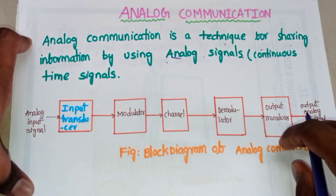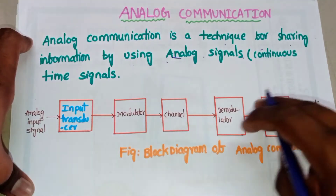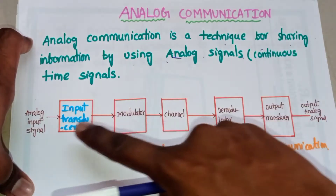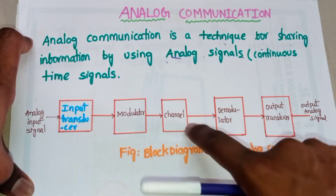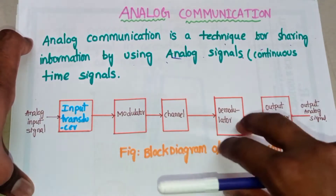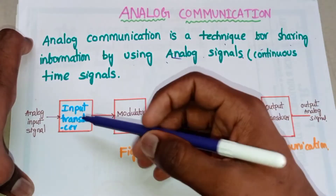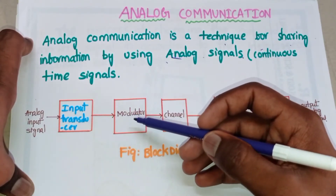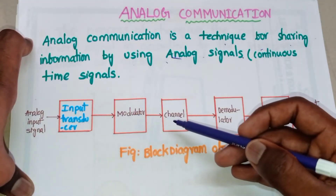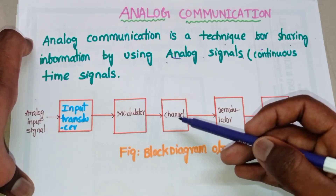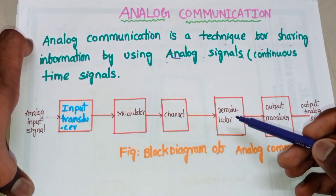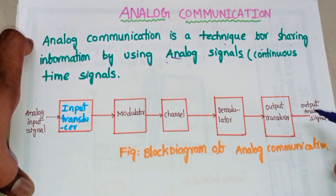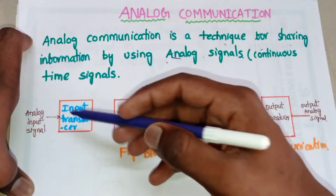Now let's see the block diagram of the analog communication system. Here we have five blocks. The first block is input transducer, the second block is modulator, the third block is channel, the fourth one is demodulator, and the fifth one is output transducer, followed by the output analog signal.